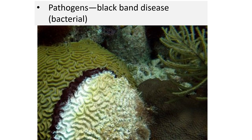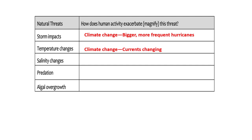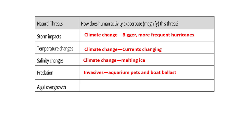There are also pathogens, such as the black band disease — a bacterial disease visible by a black band. As far as natural threats, we have storm impacts, temperature changes, salinity changes, predation, and algal overgrowth. Human activity exacerbates these: climate change brings more frequent and larger hurricanes; melting sea ice makes oceans less saline; invasive species are introduced through aquarium pets and boat ballast; and sedimentation from development plus eutrophication increases algal growth and lowers dissolved oxygen.